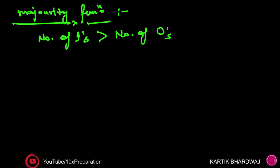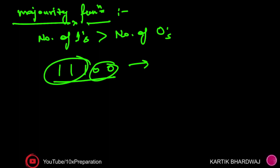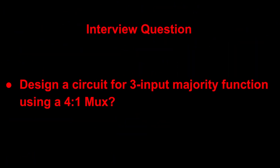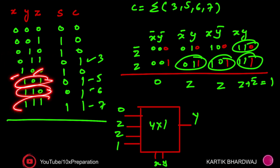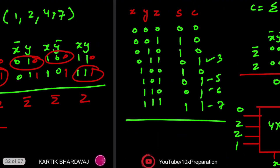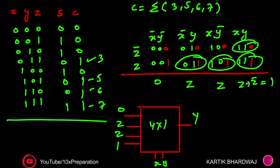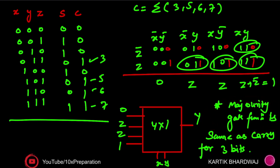The majority gate function means the number of ones is greater than the number of zeros. For example, given inputs 1,1,1,0,0 the output is one because ones outnumber zeros. For a three-input majority function, the output is one whenever the number of ones exceeds zeros — which corresponds to minterms three, five, six, and seven. Therefore the majority gate function is identical to the Carry output of the full adder.